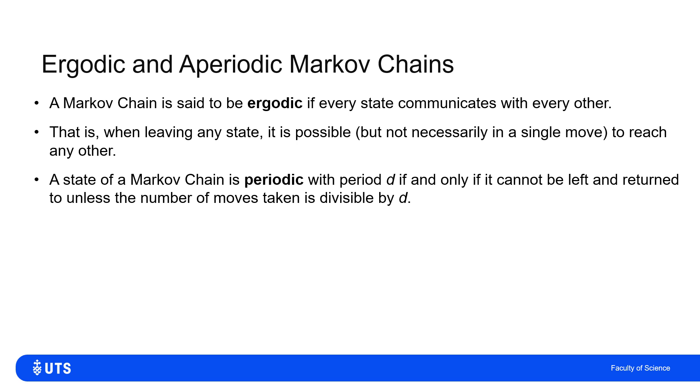We say that the state is periodic with period D if and only if it can't be left and returned to unless the number of moves taken is divisible by D. So if every return path to a state was two moves or four moves or six moves or eight moves, then we'd say that had period two. And just in terms of definition, I suppose every state which we can get back to has to be period multiples of one. So we call that aperiodic. Having period one is not really having periodicity at all. So aperiodic or not periodic.